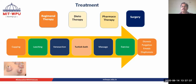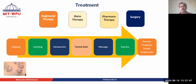Dietotherapy involves prescribing an appropriate diet depending upon the patient's temperament. Pharmacotherapy addresses drugs, and surgery is also recommended in many cases within the Unani system of medicine.